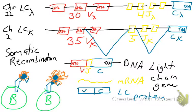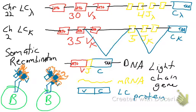That is somatic recombination of the light-chain gene, giving you a protein. Part of the protein is variable because it comes from different gene segments; part is constant because it comes from the constant gene segment. If one B cell chooses one V and one J, it gets one amino acid sequence and one three-dimensional structure. A second B cell choosing a different V and a different J — or even a different light-chain gene — will produce a different amino acid sequence and a different three-dimensional structure, giving diversity in the light-chain protein.